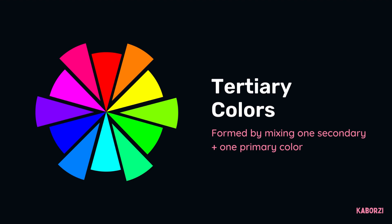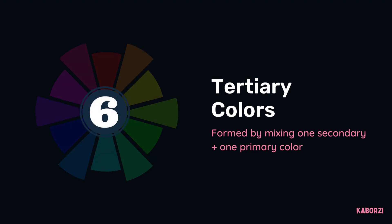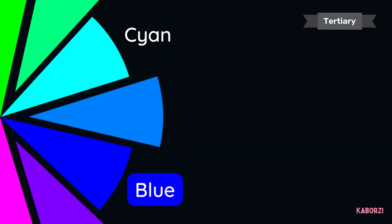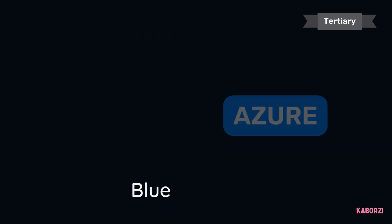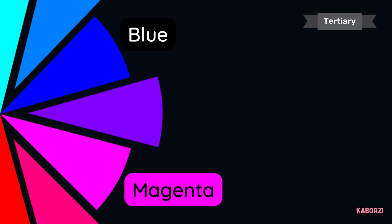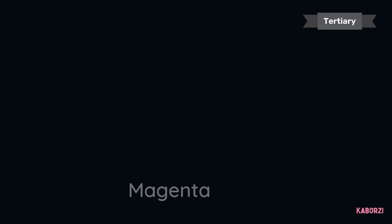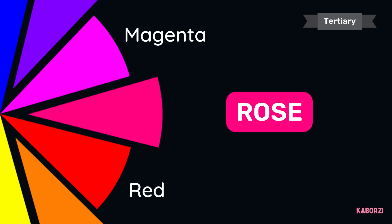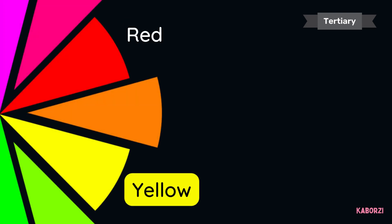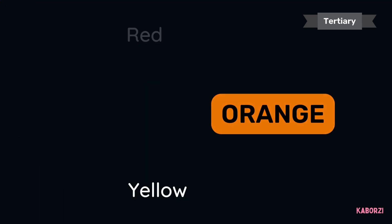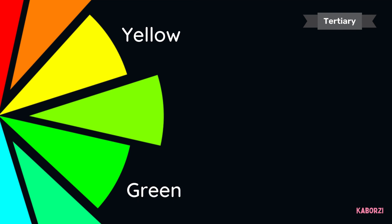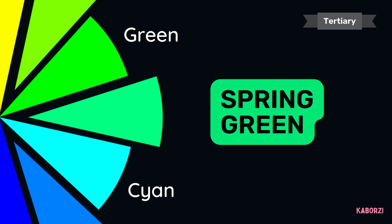Tertiary colors are formed by mixing one secondary color with one primary color. There are six in total. Here's how they're formed: cyan plus blue equals azure; blue plus magenta equals violet; magenta and red equals rose; red plus yellow equals orange; yellow and green equals chartreuse; green plus cyan equals spring green.